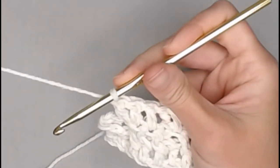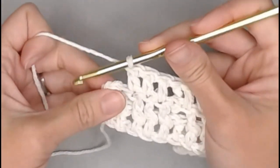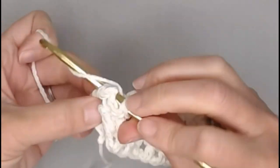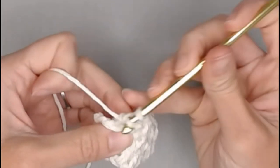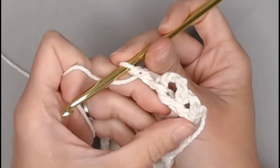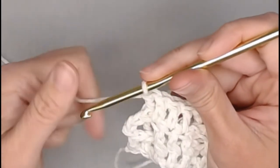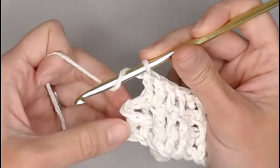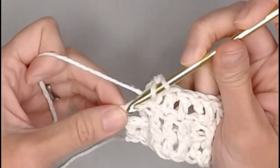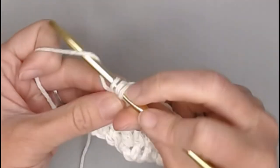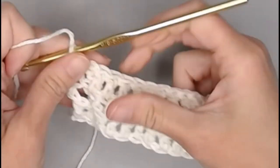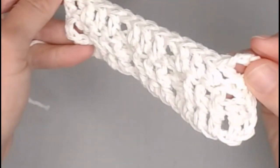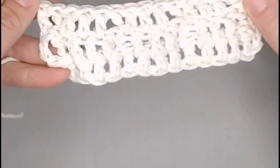And when you reach the very end of row three, the last two stitches here, you will back post double crochet around the front post double crochet of the previous row. And you will end with a regular double crochet in the third chain. One, two, three. To close row three. That is what that side will look like.